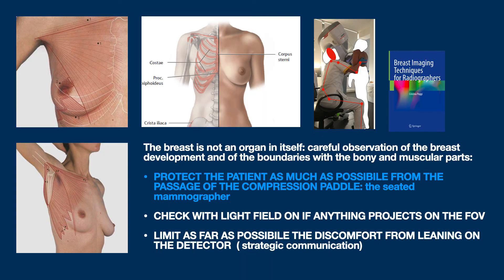This is an important point to consider for patients with small breasts and a very slender thorax. We use our hands to protect the patient as much as possible from the compression paddle. We use a light field to check nothing is projecting onto her breast, and we try to limit as much as possible the discomfort of the exam. This is why sitting when performing the oblique projection is useful — not only to limit the mammographer's MSD, but because you have both hands available and a better view of the area.